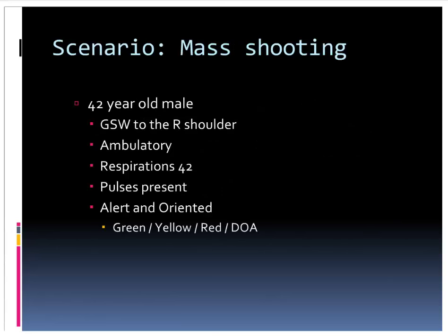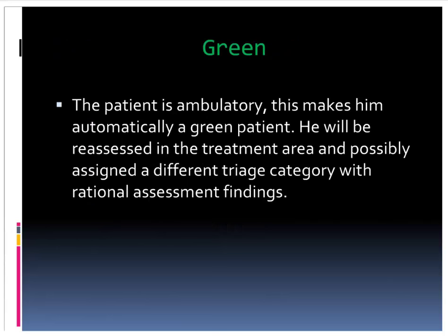A 42-year-old male shot in the shoulder. He's able to walk, breathing 42 times per minute, has a pulse at the wrist, and is able to follow commands. This patient is green, strictly because he's able to walk. He is breathing 42 times a minute, but when he gets to the casualty collection point, he'll be reassessed with more traditional and rational assessment findings.